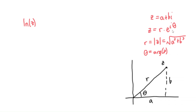Where does the e to the i theta get involved? That goes back to Euler's formula: e to the i theta is cosine theta plus i sine theta. So z can be written as r times the quantity cosine theta plus i sine theta, which equals r cosine theta plus r sine theta times i. So this is like polar coordinates for that point.